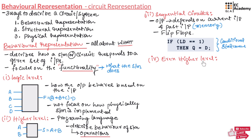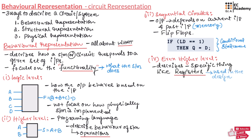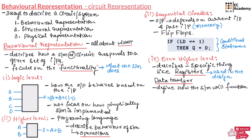Now let us understand even higher level behavioral representation. The even higher level describes specific things like registers used in the design and data transfer between those registers. These descriptions provide even less information about implementation details, but define how the system will function. We can describe the behavior as an algorithm in a higher level programming language like Python or C.